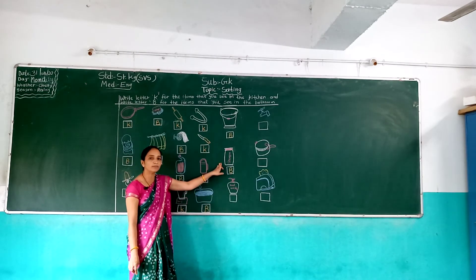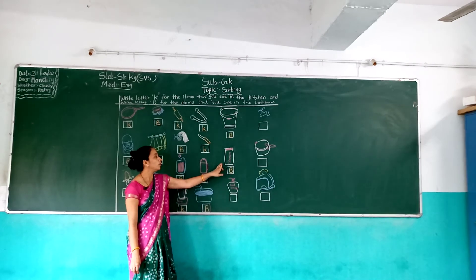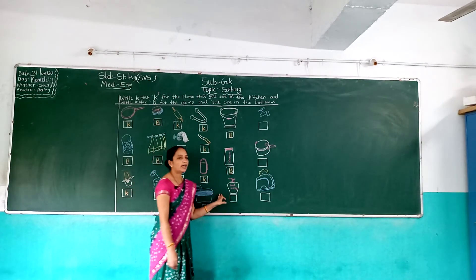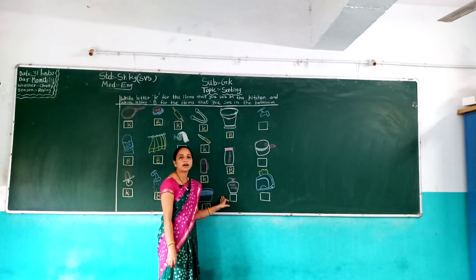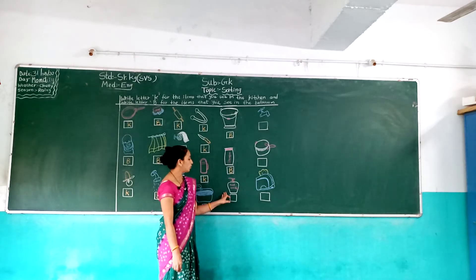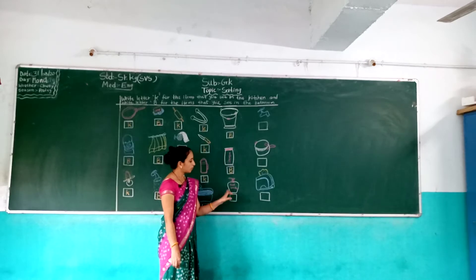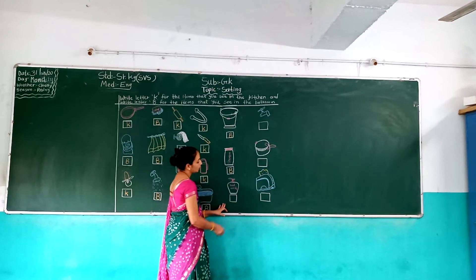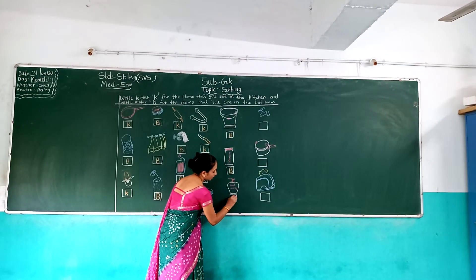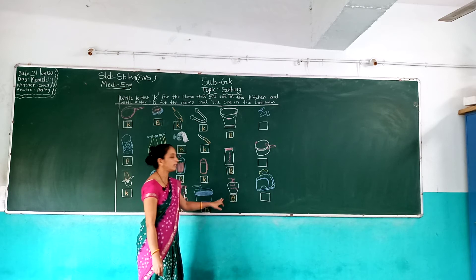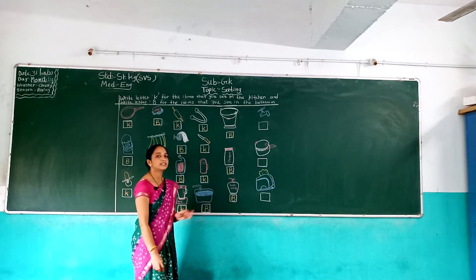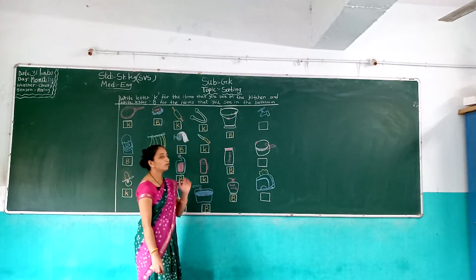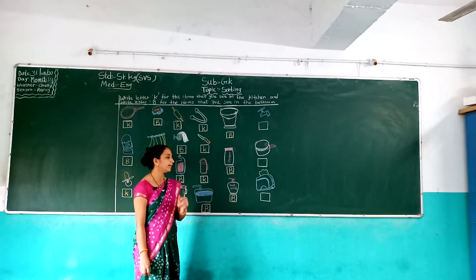Shampoo — shampoo bathroom में है. And next, hand wash — hand wash — so this is which item? Bathroom item. So here we write B. So right here B. Kitchen item में हमें K write करना है और जो bathroom item है उसमें हमें B letter use करना है.